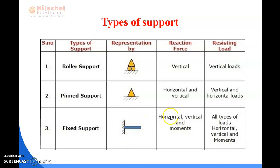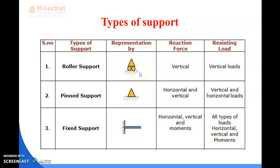The third one is fixed support, which can resist three kinds of loading: horizontal, vertical, and also moment. Because the fixed support is a rigid support, three kinds of loading are resisted, and it gives a reaction force along the horizontal and vertical directions as well as in moment. For examples: roller support is like the wheel of a vehicle, hinge or pin support is like a door, and fixed support is like the column of a building.